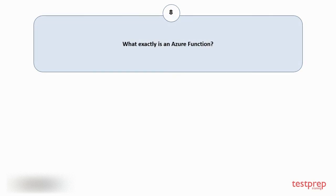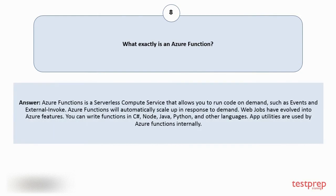Question number 8: What exactly is an Azure Function? Azure Functions is a serverless compute service that allows you to run code on demand, such as events and external invocations. Azure Functions will automatically scale up in response to demand. Web jobs have evolved into Azure Functions. You can write functions in C#, Node, Java, Python, and other languages. App utilities are used by Azure Functions internally.